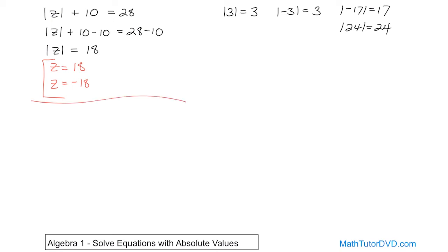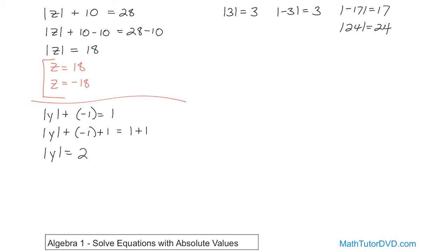Let's solve another problem. Absolute value of y plus negative 1 is equal to 1. We want to get y by himself, so we have this negative 1 here. We're going to add 1 to both sides to get rid of it. On the left-hand side this goes to 0, so you have absolute value of y equals 1 plus 1, which is 2. You haven't solved for y — you've solved for the absolute value of y. So you get two answers: y can be 2, and y can be negative 2.